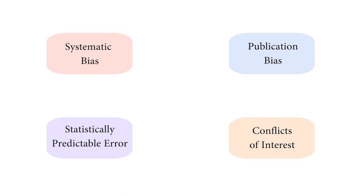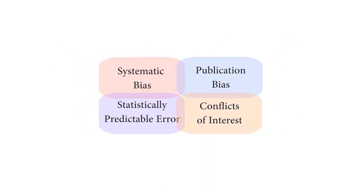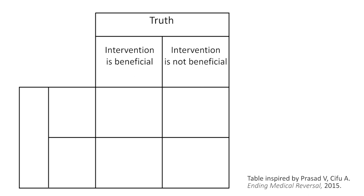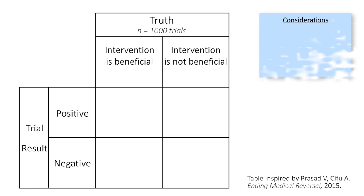So I've talked about how systematic bias, publication bias, statistically predictable error, and conflicts of interest all individually contribute to the phenomenon of most published medical research being wrong. But let's take a look at how they interact synergistically. To do this, I'll need to construct some two-by-two tables. We'll be looking at whether a hypothesis is true or false, against whether a clinical trial testing that hypothesis was a so-called positive trial or negative one. Let's take a collection of 1,000 hypothetical, well-designed, randomized, controlled trials, and initially just consider statistically predictable error. That's it to begin with.